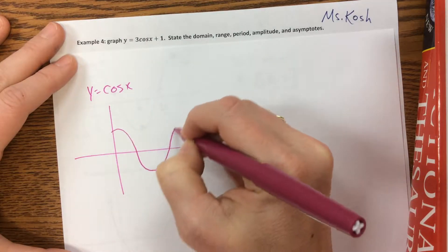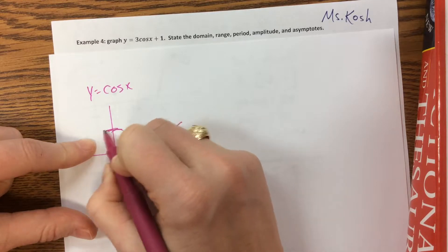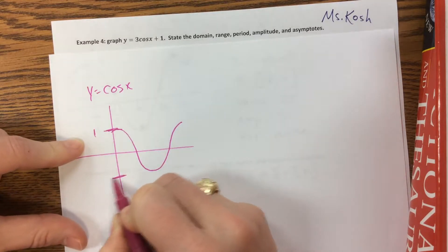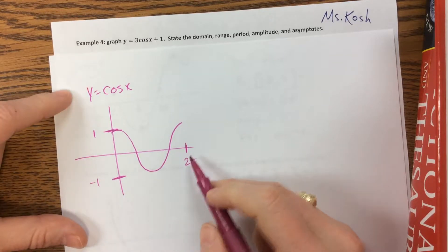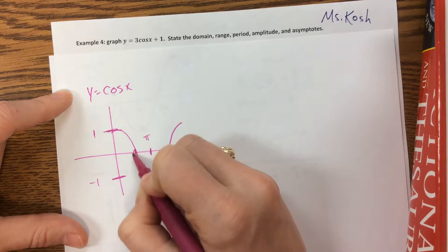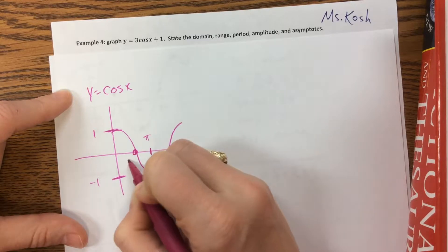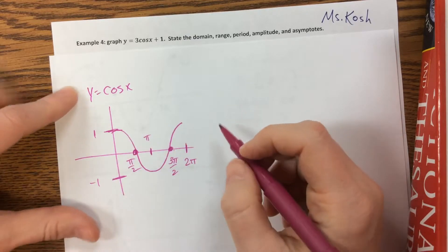You'll notice the first thing that you always have to know is what does the parent function look like. The parent function of cosine looks something like this, where this goes as high as positive 1 and it goes as low as negative 1, and it does that in 2π. So since it does the whole thing in 2π, then this is halfway at π. Half of that, my scale is a little off, but let's just go with it. This is π/2, this is 3π/2. And that's the parent function.